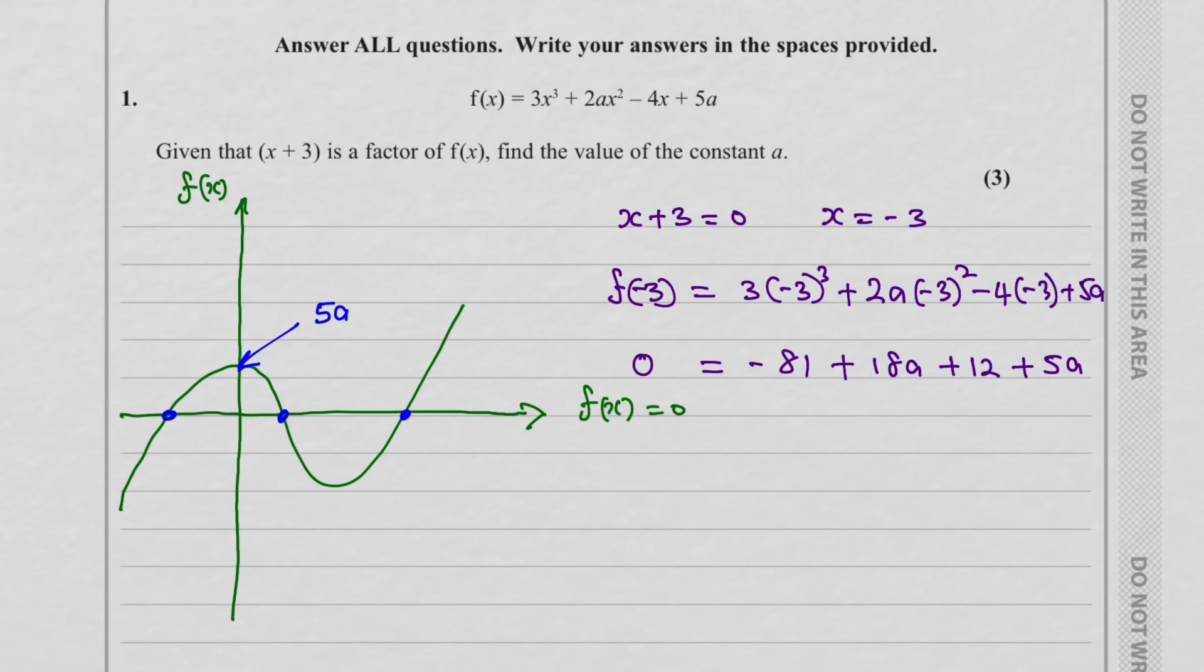So what we can do now is collect like terms. 18a plus 5a will be 23a. And that will be equal to 69 because minus 81 plus 12 is minus 69, and take it to the other side will be plus 69.